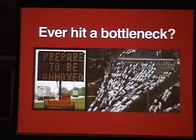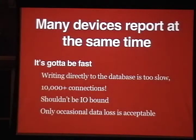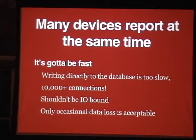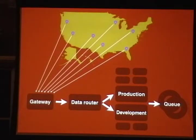The first thing we hit was a bottleneck. We've got 10,000 inverters all trying to come into the system at once, so we needed to design something flexible that allowed all the inverters to come in at the same time and be processed efficiently. It has to be fast, handle 10,000 inverters, and we can't wait for I/O if we can avoid it. We determined that some data loss is acceptable — if a few messages drop, it won't make a huge difference in the grand scheme of analytics. We decided to write directly to a data queue in an ActiveMQ instance.